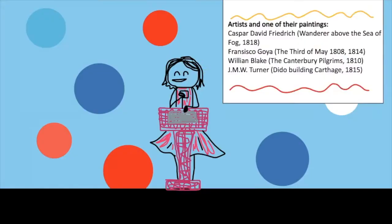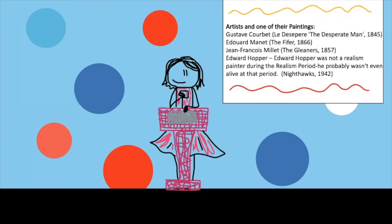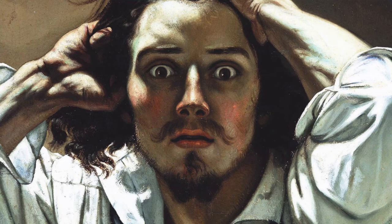The next era is Realism, which happened between 1840 and 1870. These paintings were based around the concept of presenting everyday situations in a realistic way. The Desperate Man was a painting from the Realism Era.